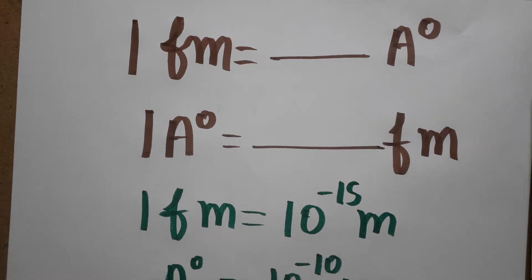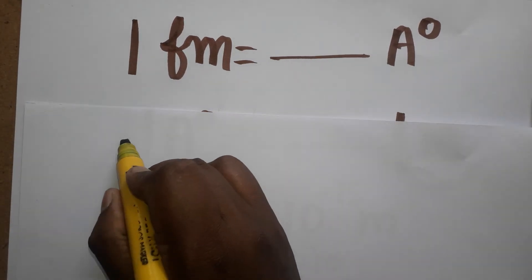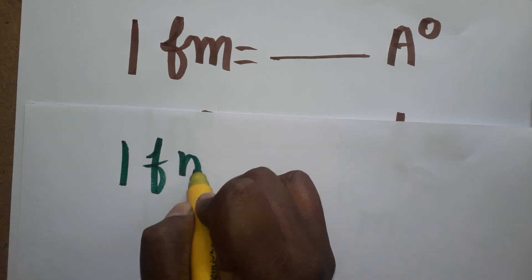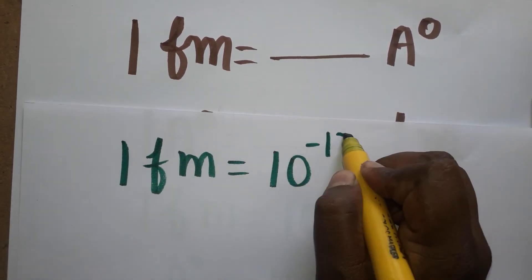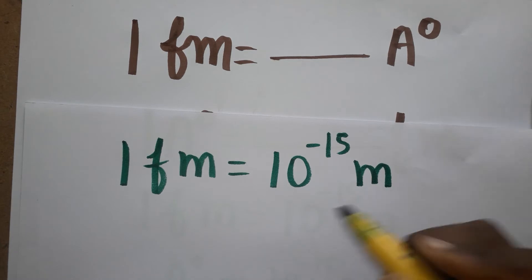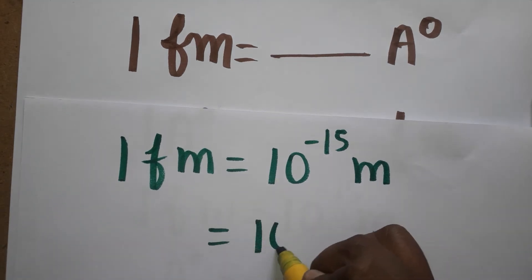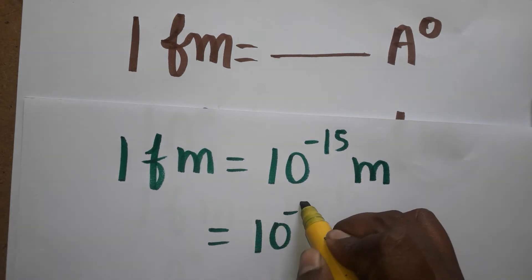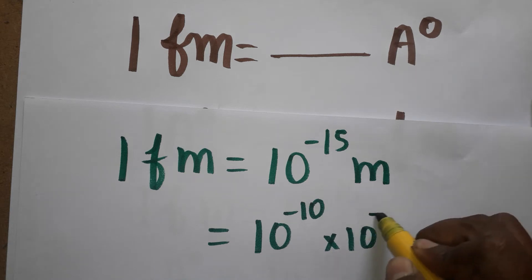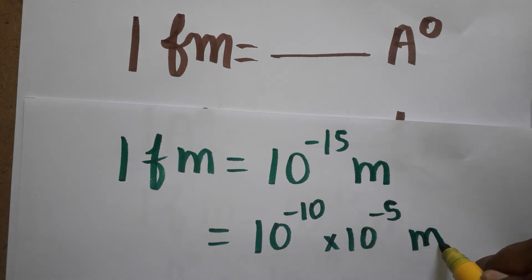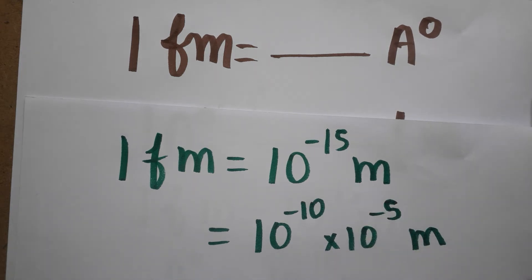Now we have both units expressed in terms of meter, so we are going to convert femtometer to angstrom unit. One femtometer is equal to 10 power minus 15 meter. We can write this as 10 power minus 10 into 10 power minus 5 meter.